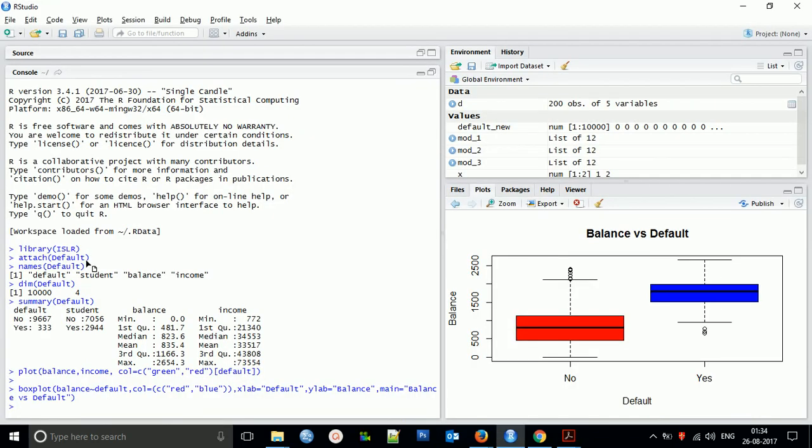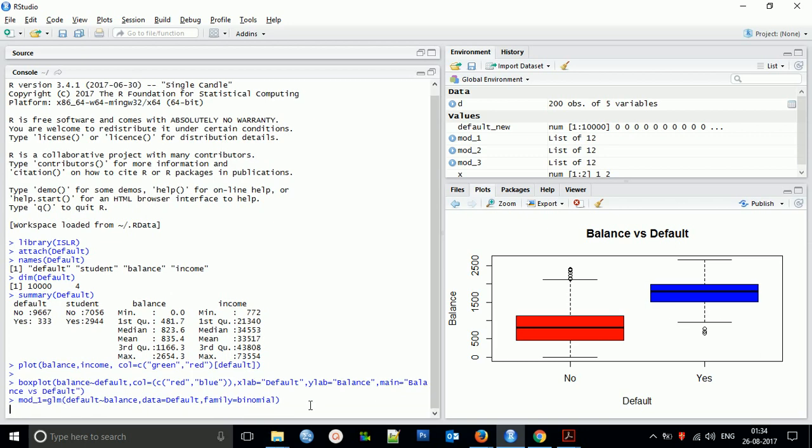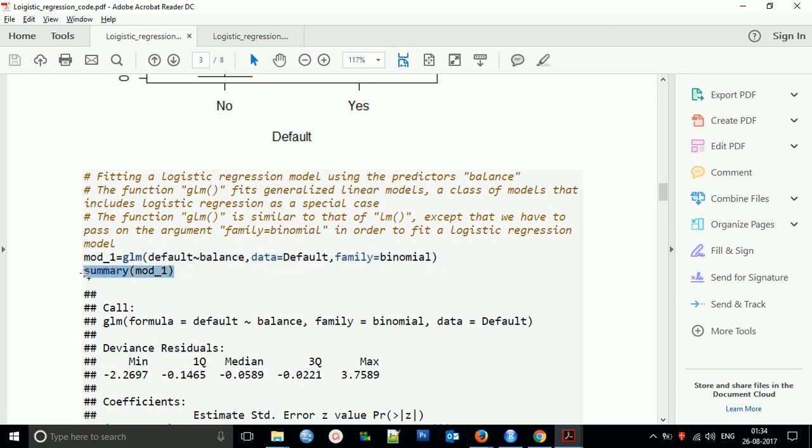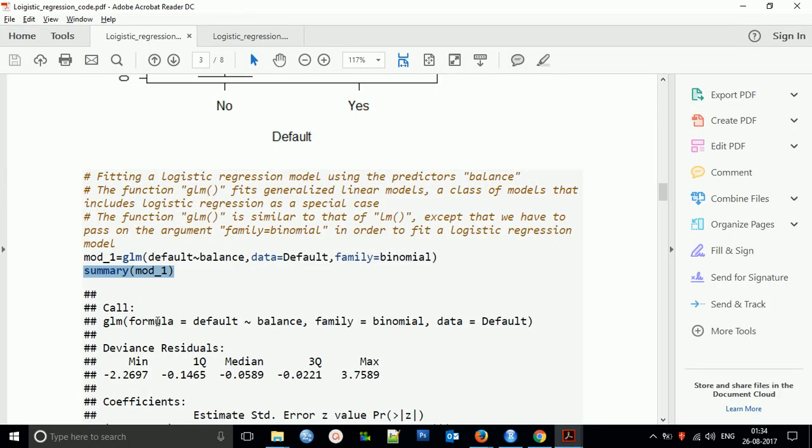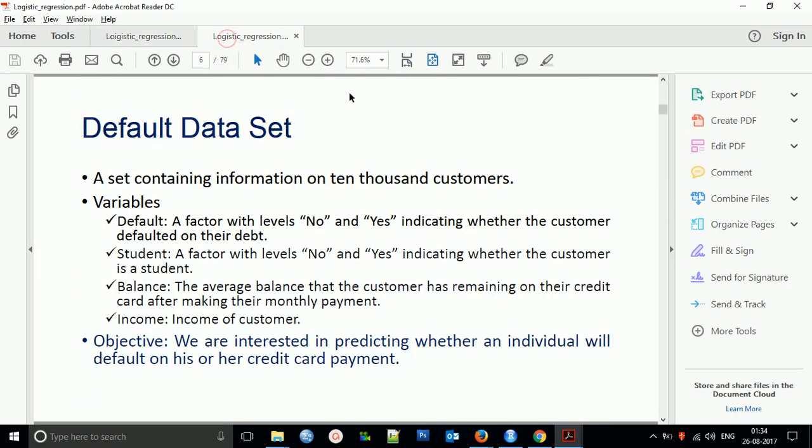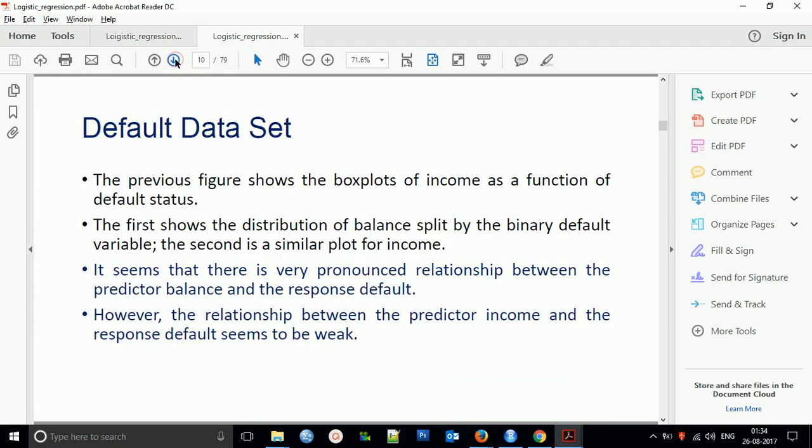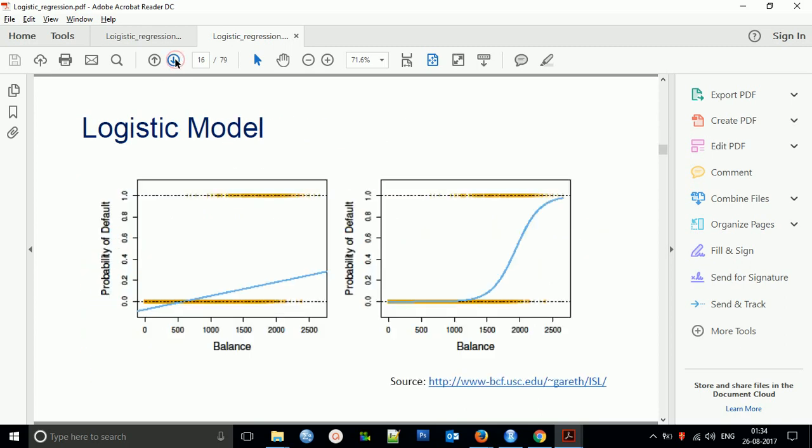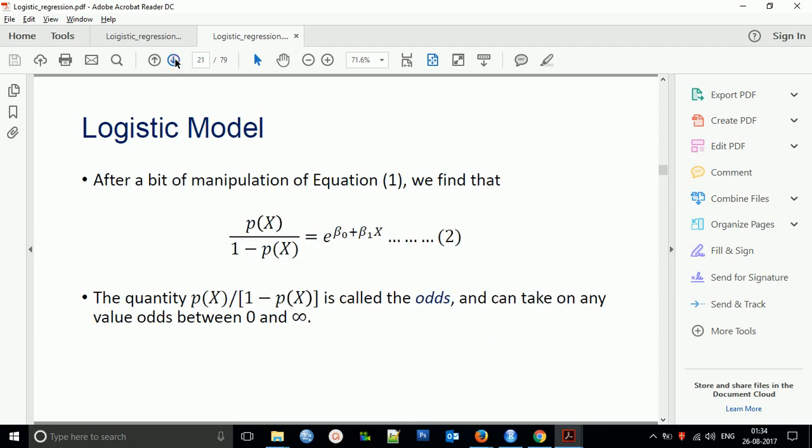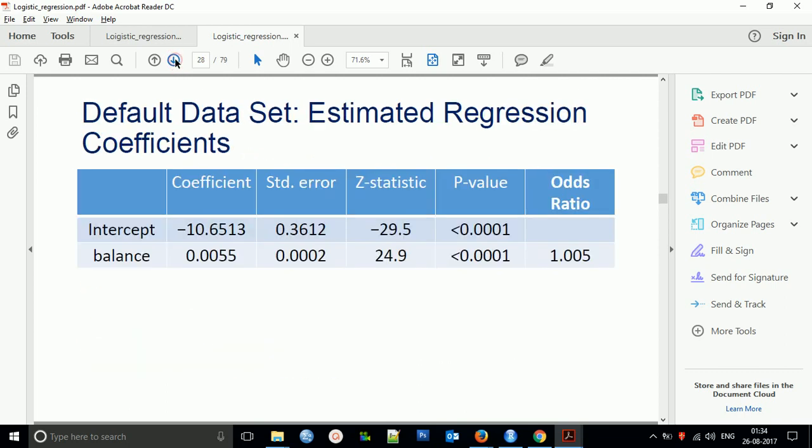The glm function is similar to the linear model function, but we have to pass the argument family equals binomial to fit logistic regression. I'll call the model to get the details. These are the results we're getting, and we need to understand this very carefully.